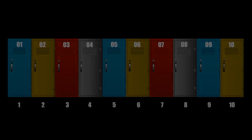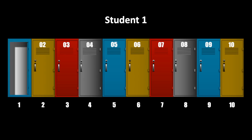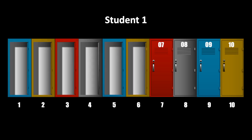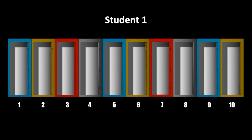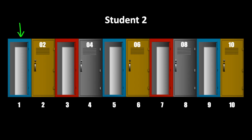With these types of problems, I like to bring the problem down to a smaller case. Let's simplify the problem down to just 10 lockers and 10 students. We can see the first student will go and open every single locker. Notice that the first locker will stay open forever, so we can add one open locker to the tally.